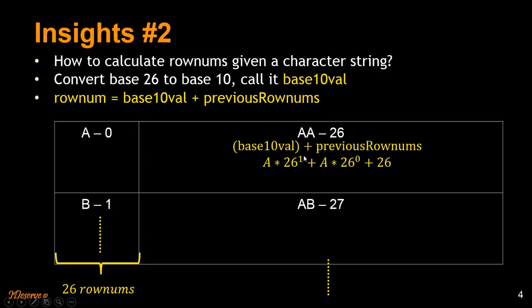So since this is the 10th place, we have the power 1 here. And we add A, A is at the unit's place. So A into 26 power 0. This is base 10 value of AA.